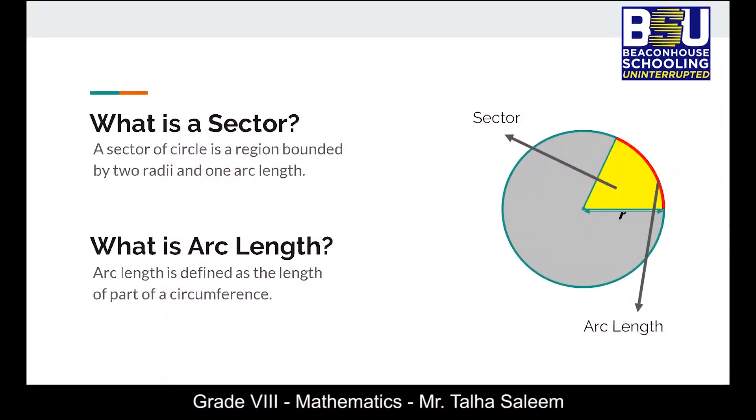So let's define the concepts that we just studied in the previous slide. A sector of a circle is a region bounded by two radii and one arc length. Whereas arc length is defined as length of small part of the circumference.